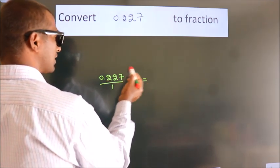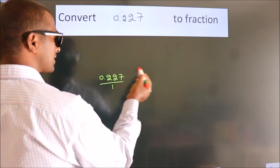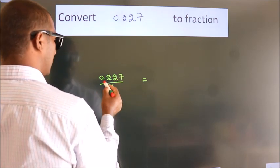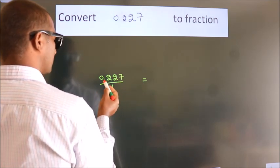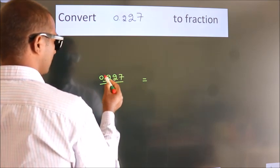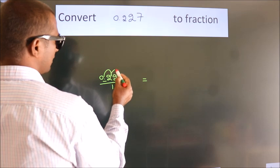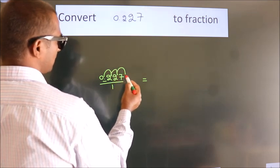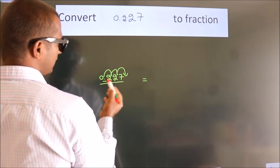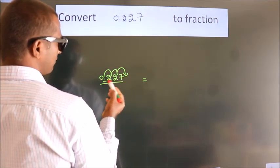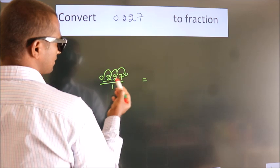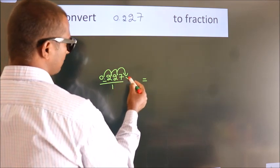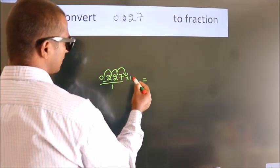To convert this to a fraction, we have to move the decimal after 1, 2, 3 numbers. To move this decimal after 3 numbers, we have to multiply it with 1000.